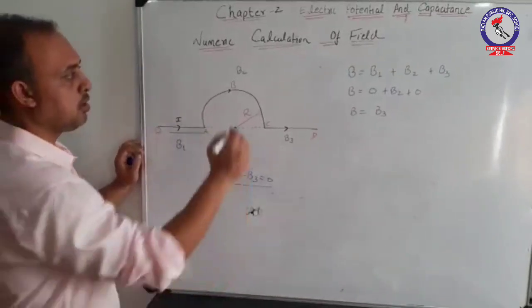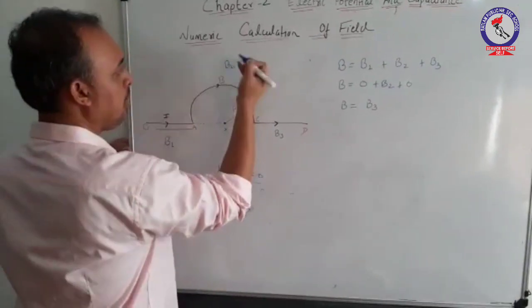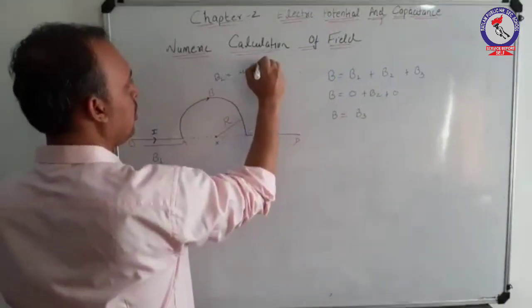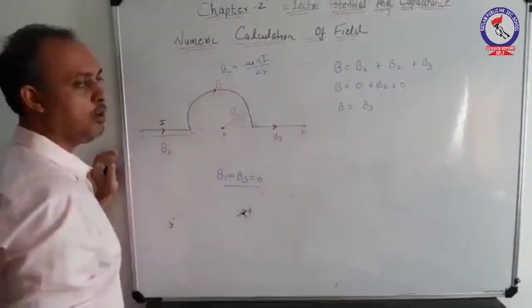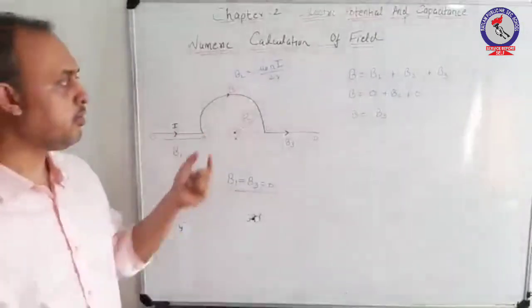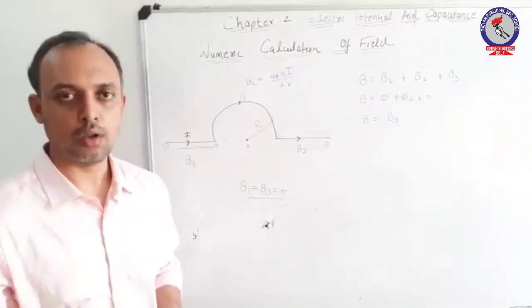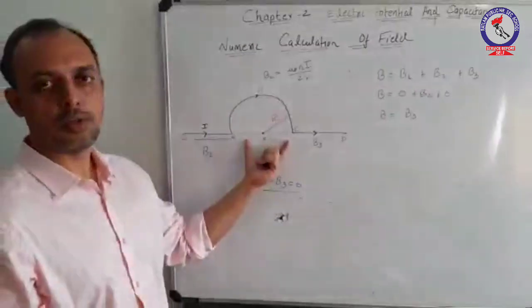Now, what is the field of a semicircular coil? Since we know that field of a circular coil is μ₀Ni by 2R. This is the field at the center of a circular coil. We are using a semicircular coil.